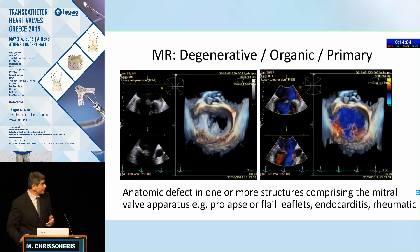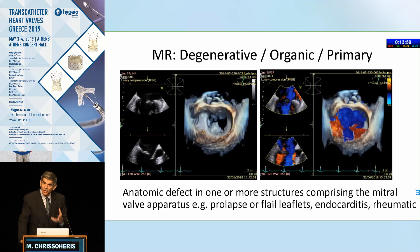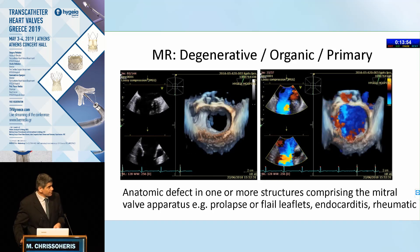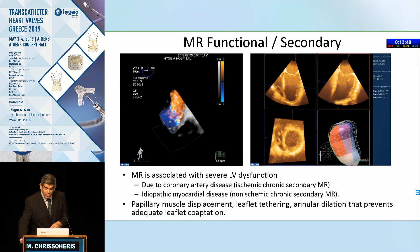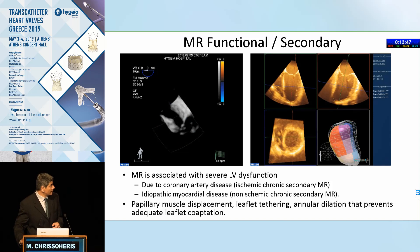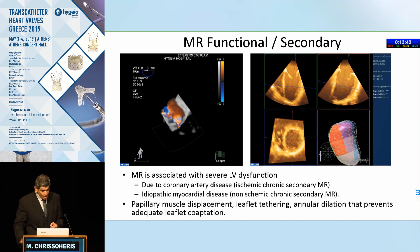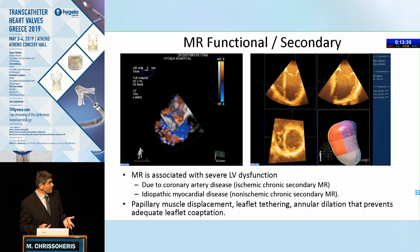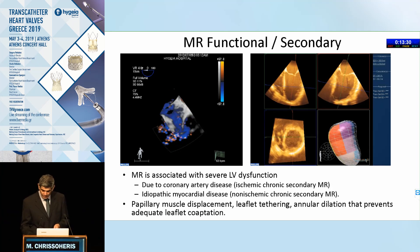Regarding degenerative, organic, or primary MR — however you want to call it — the defect is primarily on the leaflets or the mitral valve apparatus, as in this case a P2 prolapse with severe regurgitation. On the other hand, severe functional ischemic or secondary MR is primarily due to LV dysfunction caused by coronary artery disease or idiopathic reasons, with displacement of the papillary muscles, tethering of the leaflets, and annular dilatation leading to abnormal coaptation.